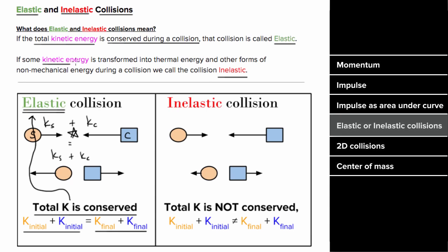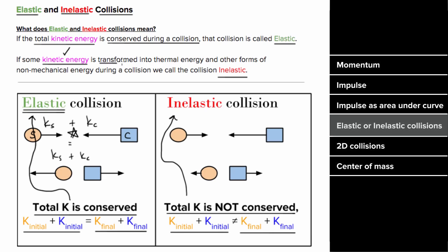For an inelastic collision, the kinetic energy is not conserved during the collision. In other words, the total initial kinetic energy of the sphere plus cube would not equal the total final kinetic energy of the sphere plus cube. Where does this kinetic energy go? Typically, in an inelastic collision, some of that kinetic energy is transformed into thermal energy during the collision.